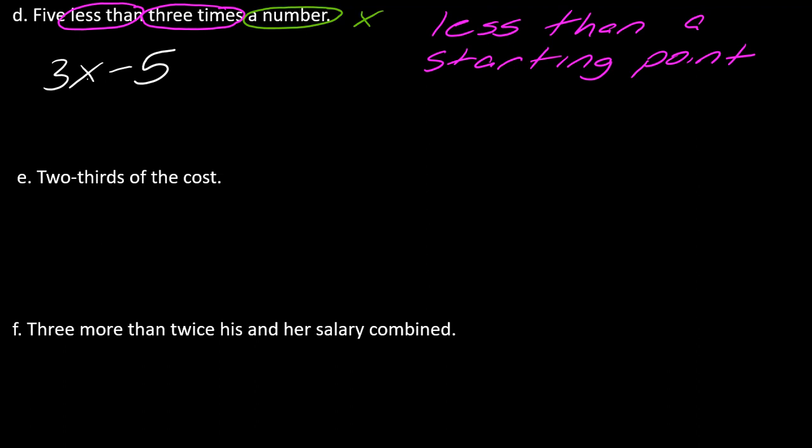So the next one, two-thirds of the cost. Once again, we don't know what the cost is. So we'll just let that be C. Now, the word that's indicating the operation to use is the word of here. Of means multiplication. So two-thirds, two-thirds is a fraction. Two-thirds of C. So it'd be two-thirds times C or just two-thirds C.